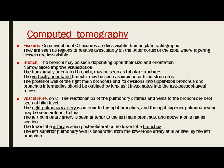The relationship of the pulmonary arteries and veins to the bronchi is best seen at a higher level. The right pulmonary artery is anterior to the right bronchus, and the right superior pulmonary vein may be seen anterior to this. The left pulmonary artery is seen anterior to the left main bronchus and above it on a higher section, so the pulmonary veins are anterior to the pulmonary arteries on both sides. The lower lobe artery is seen posterior lateral to the lower lobe bronchus. The left superior pulmonary vein is separated from the lower lobe artery at a higher level by the left bronchus.